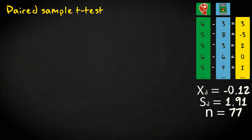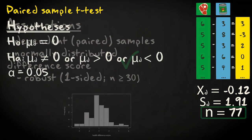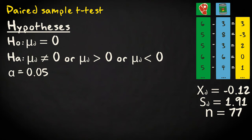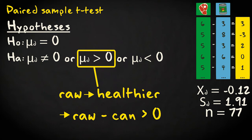First, I transform the raw scores into difference scores and check whether they are distributed normally by looking at the histogram of the difference scores. The distribution looks normal, but even if it hadn't, the sample size is large enough to ensure a robust one-sided test. The null hypothesis states that the mean difference score is zero. My one-sided alternative hypothesis is that the difference will be larger than zero, since I subtracted the canned food health scores from the raw meat health scores.